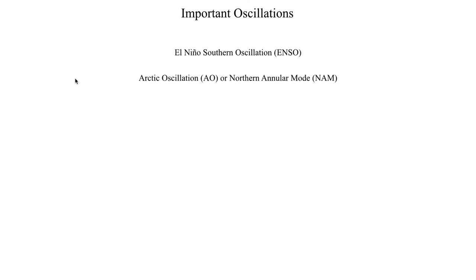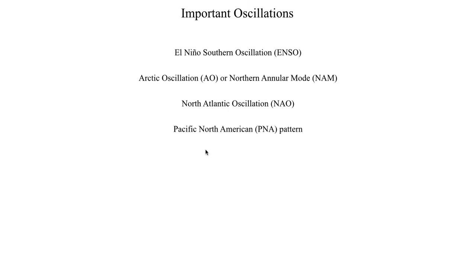Some other oscillations that aren't as frequently talked about include the Arctic Oscillation, or the Northern Annular Mode — AO or NAM — which will be a topic for the final segment. Another one we're going to talk about is the North Atlantic Oscillation, or the NAO. There's also the Pacific North American Pattern, or the PNA, but we won't actually cover that in this lecture.